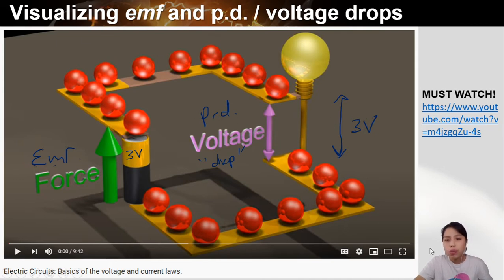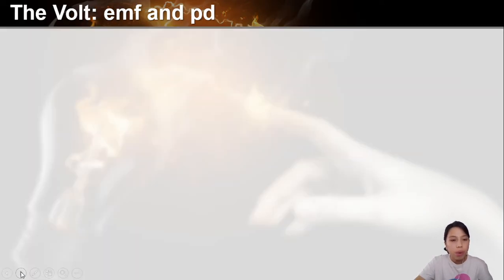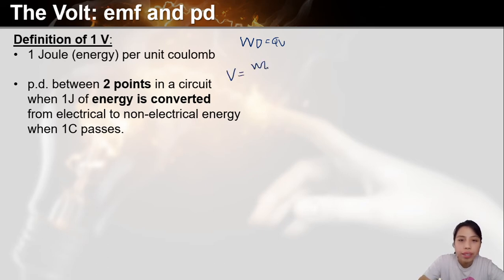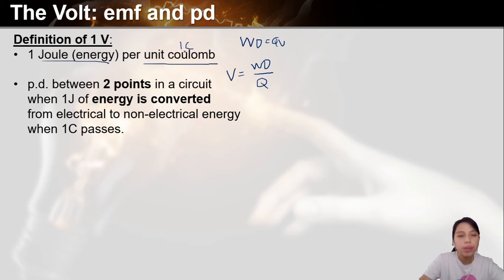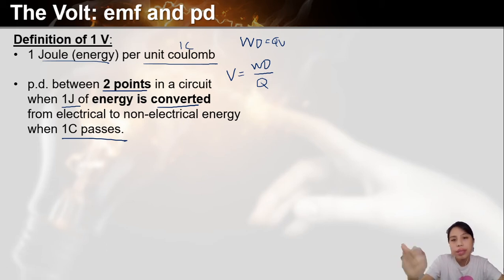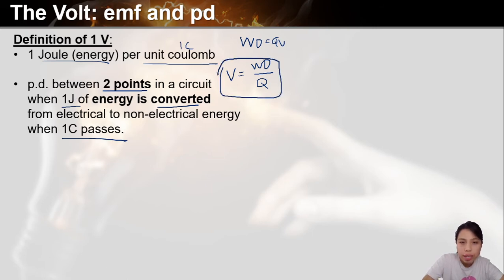Now what are these volts things? Volt is a unit, but you also need to be able to define it. Volt is related to energy per charge — based on work done equals QV. So 1 joule of energy per unit coulomb equals 1 volt. That's how they define it. And using the same definition: potential difference between two points when 1 joule of energy is converted when 1 coulomb passes.